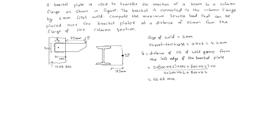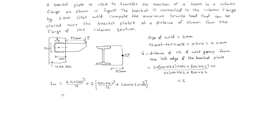Now we find IXx of the weld group. IXx = (4.2 × 200³)/12 for the vertical leg, plus 2 × [(200 × 4.2³)/12 + 200 × 4.2 × 100²] for the two horizontal welds, which equals 1960.2 × 10⁴ mm⁴.